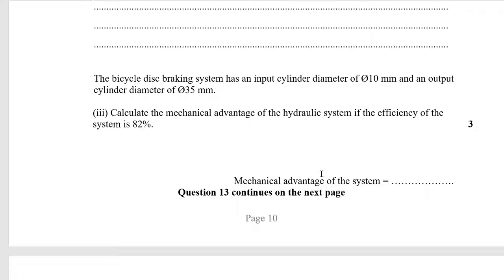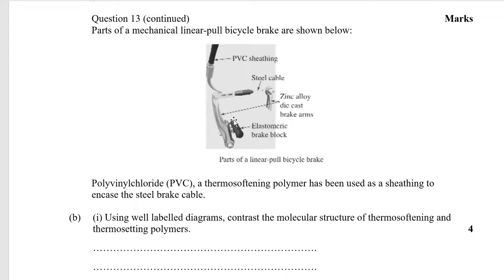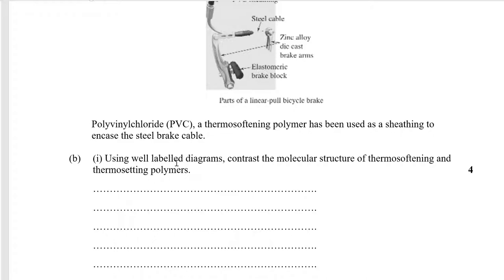Calculate mechanical advantage — I've discussed how to do this; I've got videos that go through the process, and it's in the Copeland book. It asks about efficiency, and we have talked about efficiency. PVC is a thermosetting polymer used in sheathing to encase the steel brake cable — here they've gone from a hydraulic cable to a mechanical brake cable, which has been on every bike I've used.